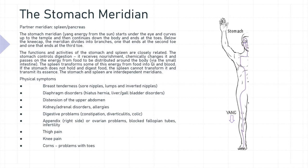Physical symptoms associated with the stomach meridian imbalance are breast tenderness such as sore nipples, lumps, and inverted nipples, diaphragm disorders, hiatus hernia, liver or gallbladder disorders, distension of the upper abdomen, kidney or adrenal disorders, allergies, digestive problems such as constipation, diverticulitis and colic, appendix or ovarian problems, blocked fallopian tubes and infertility, thigh pain, knee pain, corns, and problems with the toes.